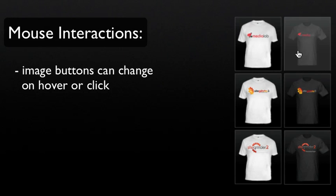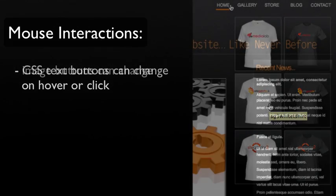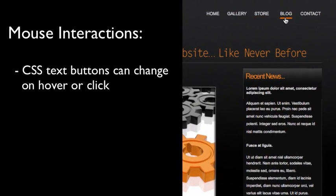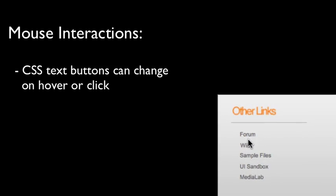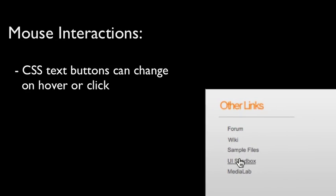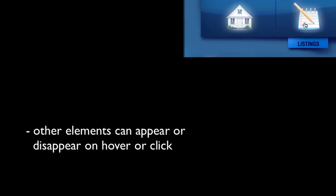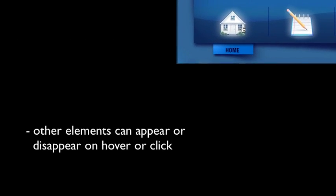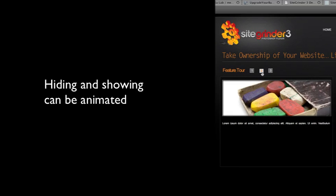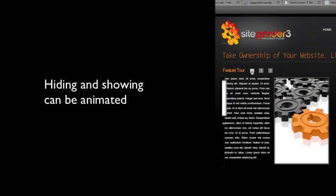Modern web pages have a lot of interesting ways to visually respond to mouse movements and clicks. Buttons made from images can look like anything and can completely change in appearance on hover and/or click. Buttons and menu items made from search engine friendly CSS text can also change in appearance on hover and/or click, although in more limited ways. Arbitrary images, text, and really whole areas of your page can appear or disappear when a button is hovered over or clicked on. Submenus can pop up or fly out based on mouse movement or clicking, and many of these changes can be animated with fades or movement. You create all of these effects just using layers with hints, so let's take a look at the simple techniques we can use to make our pages come alive.